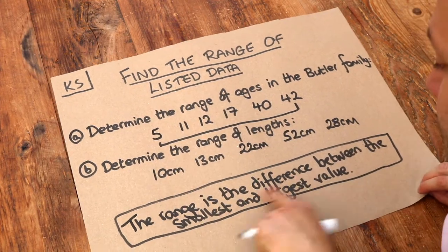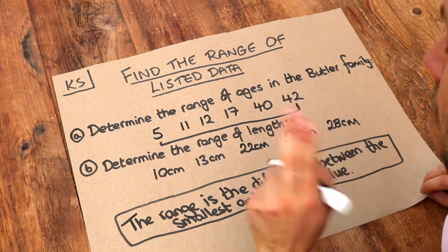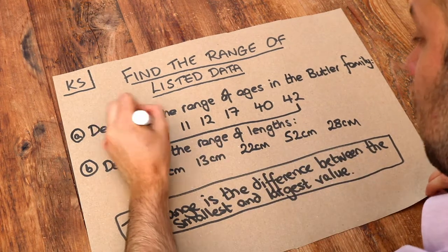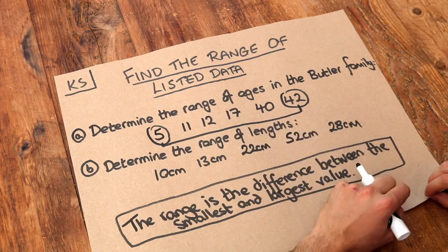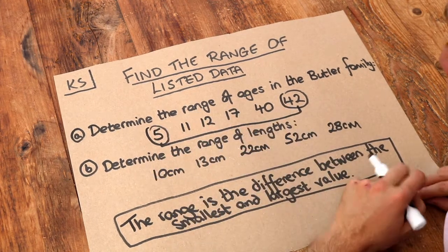So we want to find the difference between the smallest and largest value. First, identify what the smallest value is and the largest value is in the data. Now in this particular case I've made it easy because the values are in ascending order.